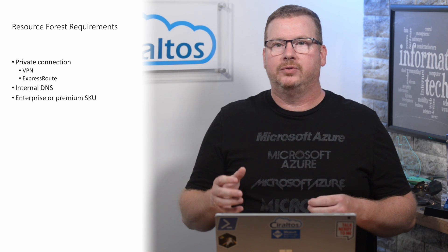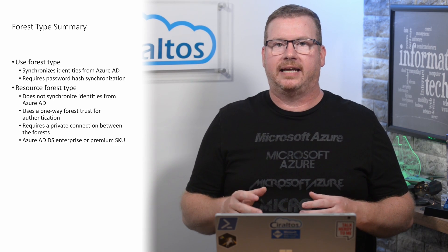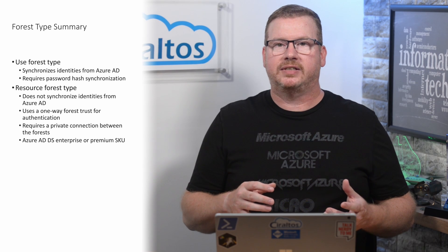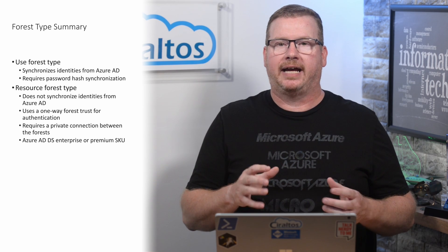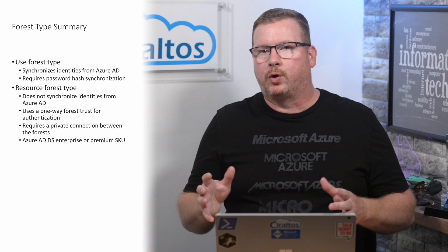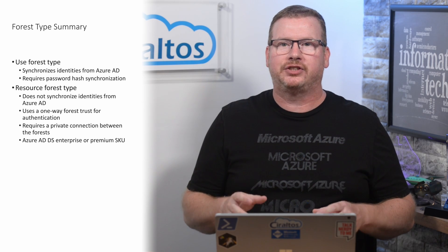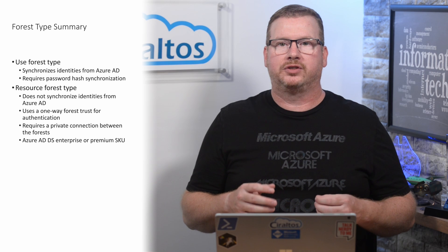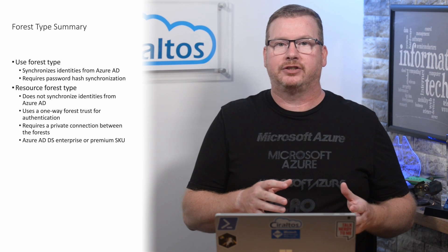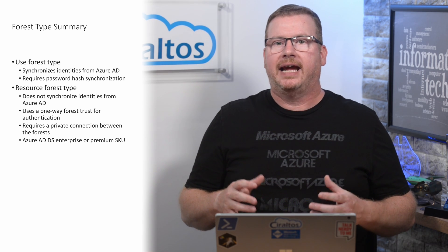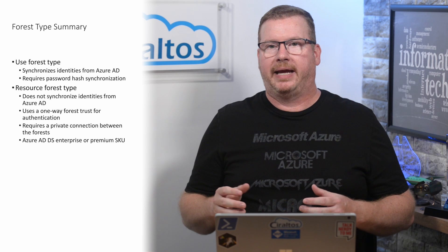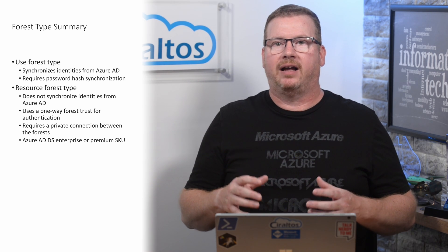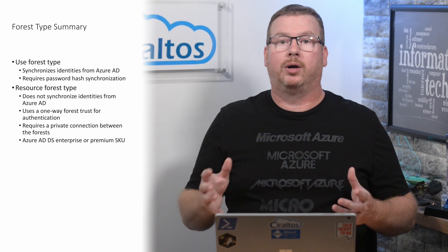To recap: a user forest type synchronizes identities from Azure AD — both cloud and on-premises — and requires password hash synchronization. A resource forest type is used when password hashes are not available; it uses a one-way forest trust between the Azure AD Domain Services domain and the Windows domain, along with connectivity between them. A resource domain also requires an Enterprise SKU or above.